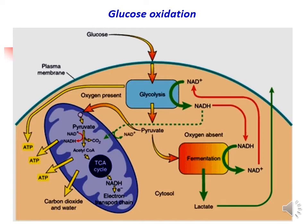Glucose oxidation: The end product of glycolysis is pyruvate. Pyruvate, in the presence of oxygen, enters the mitochondria and is converted to acetyl-CoA. Acetyl-CoA is further oxidized via the TCA cycle to produce ATP, carbon dioxide, and water. In the absence of oxygen, pyruvate undergoes lactate fermentation to produce lactate. Formation of lactate from pyruvate will regenerate NAD+, which is needed in an early step of glycolysis.